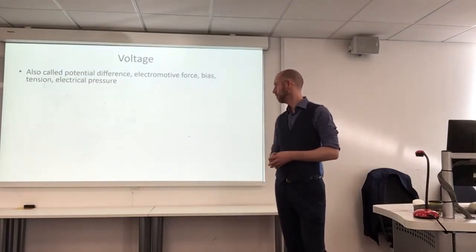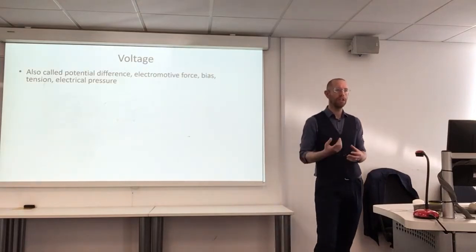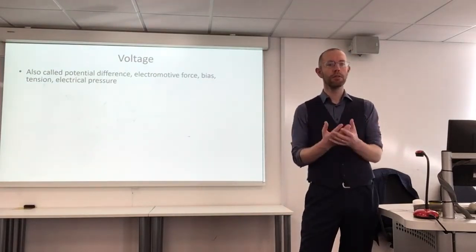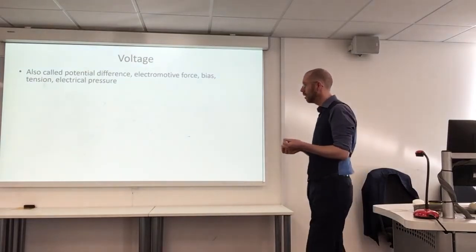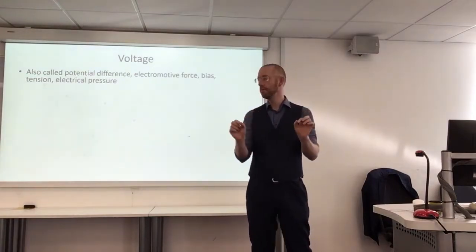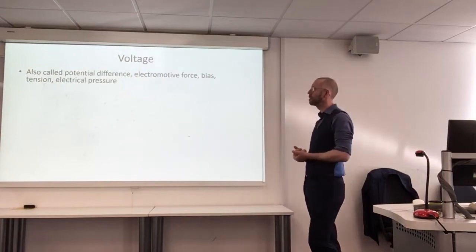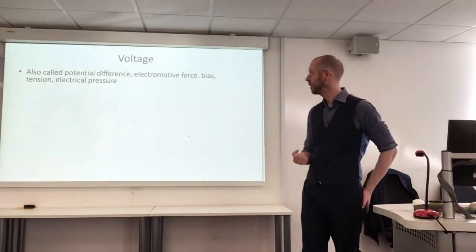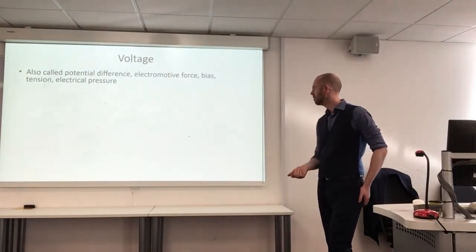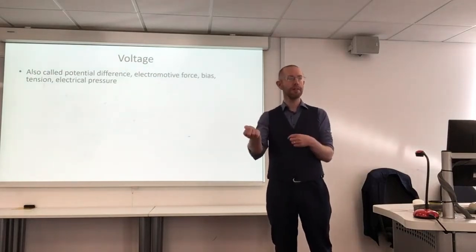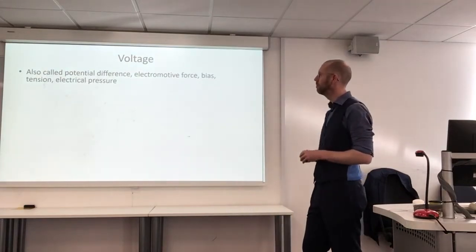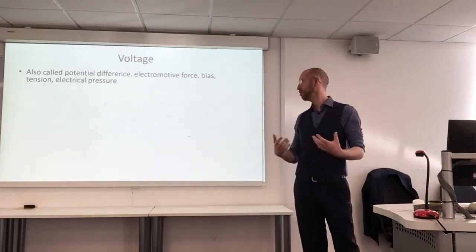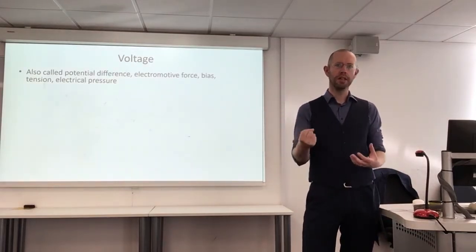Take potential difference — a nice way of thinking about voltage is as a potential of something to happen, and it's a difference between two points, so voltage only has meaning between two points. Then there's electromotive force — it's useful to think of voltage as being like a force that's pushing electrons around a circuit. Bias is like favouring one point over another, causing the flow of electrons. Tension and electrical pressure both go back to this idea of pushing electrons around a circuit.